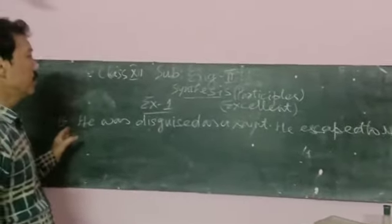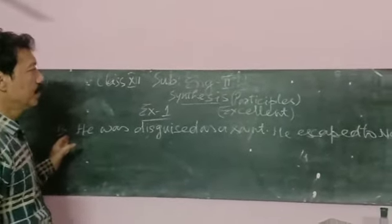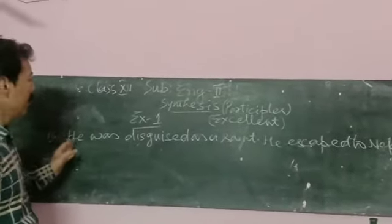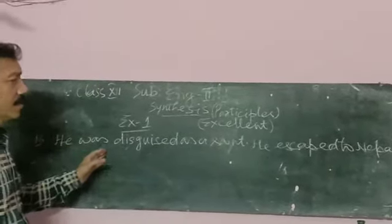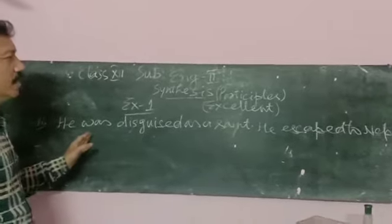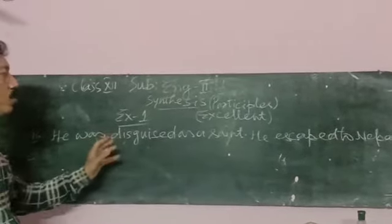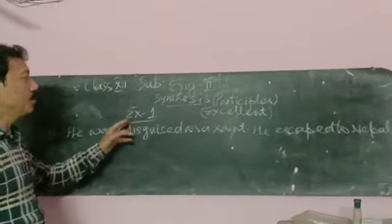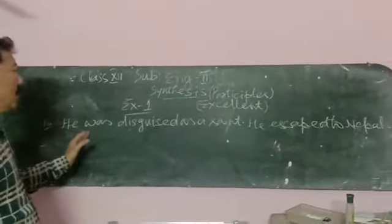This is number 16. Since this is exercise number 16: He was disguised as a saint, he slipped to Nepal. Excellent book ka batch ho, ye pehle the vidya karad abhi. Excellent book ke exercise first ka hai.